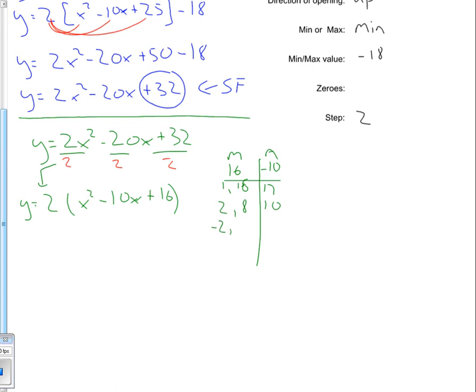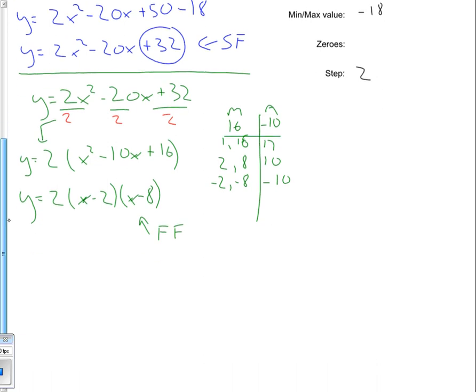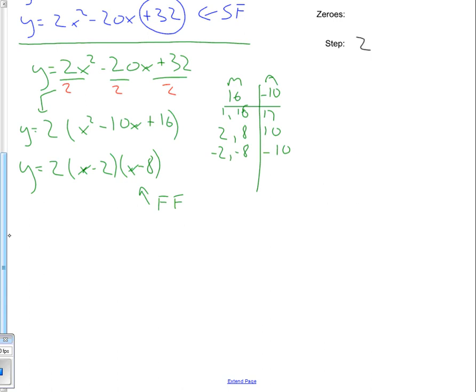But negative 2 and negative 8, they multiply to positive 16, but when I add them together, they add to negative 10. So my factored form of the equation is going to be 2 times x minus 2 times x minus 8. So now I have the factored form of the equation. And given the factored form of the equation, it will let us know what the zeros are.